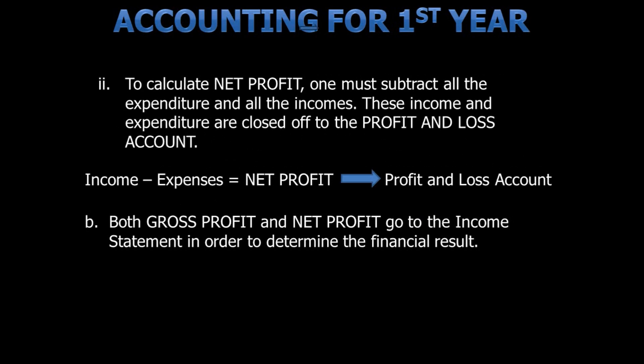Next, we need to calculate net profit. In order to do this, one must subtract all the expenditures from the income. These incomes and expenditures are then closed off to the profit and loss account. So, income less expenses are equal to net profit.